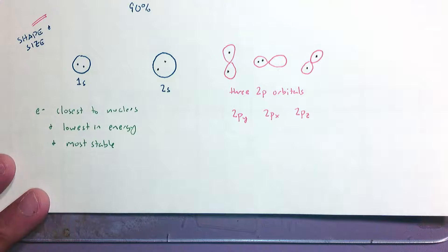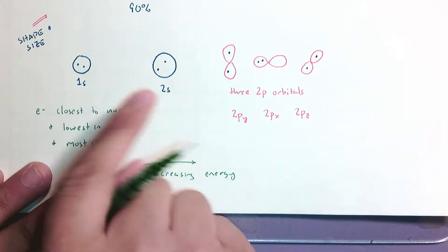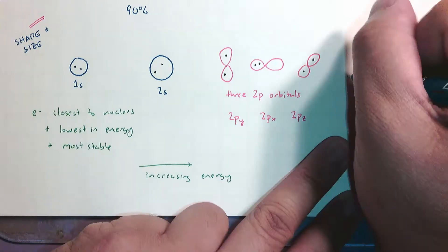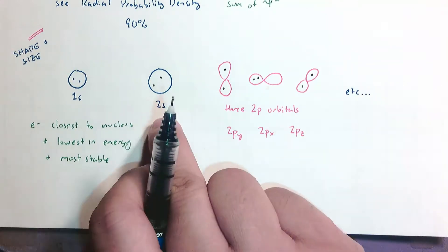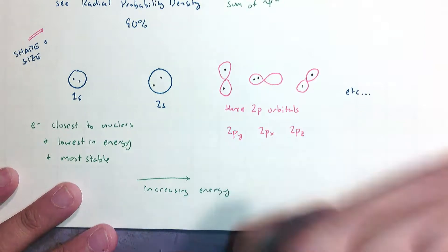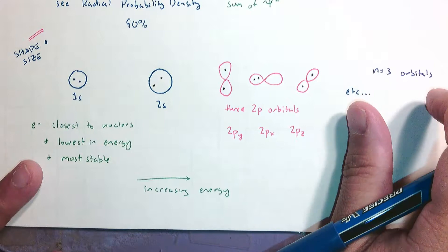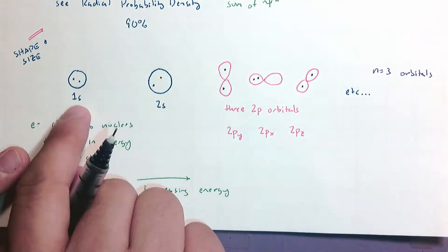The order so far in increasing energy is: 1s, then 2s, then the three 2p orbitals (2px, 2py, 2pz), and then et cetera. We're not going to look at what's next right now — it would be 3s and then 3p orbitals — we're going to go on to the n equals 3 orbitals later. There's actually one more type of orbital I want to discuss: we have s, p, and next is called d.